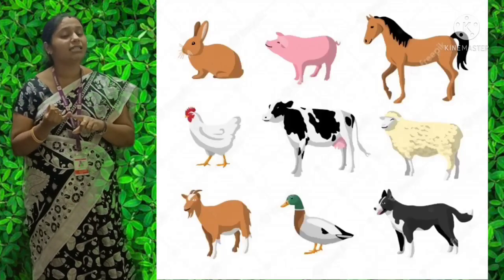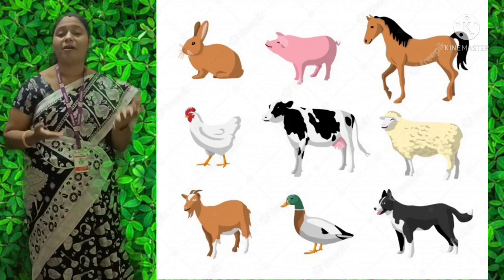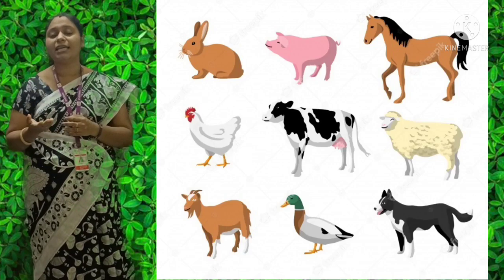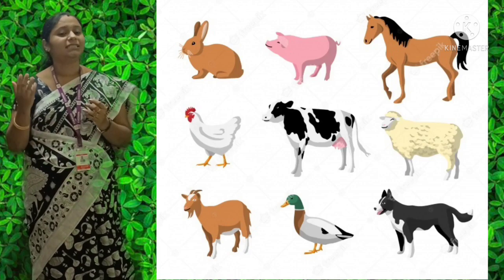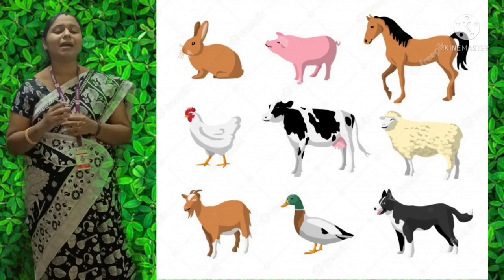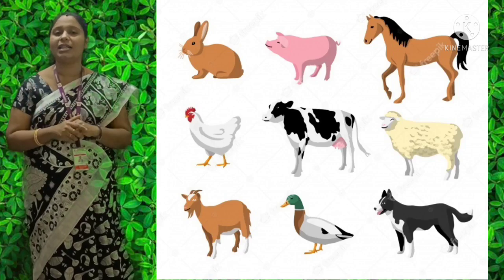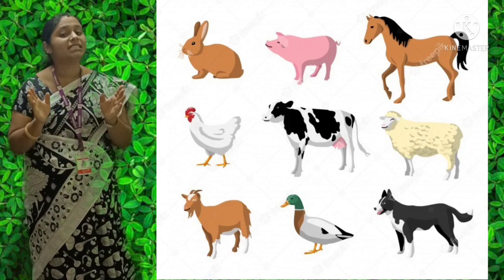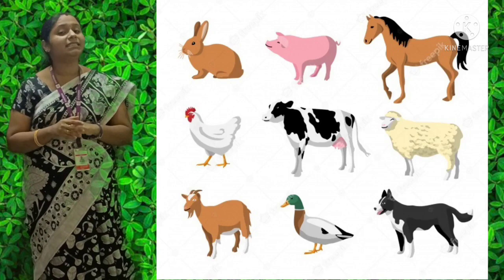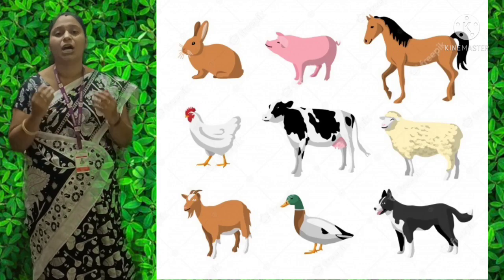Examples of Domestic Animals: Dog, Cat, Cow, Buffalo, Horse, Donkey, Hen, Duck, Goat, Camel, etc. All these are known as Domestic Animals. Now let us see how they are helpful to us.